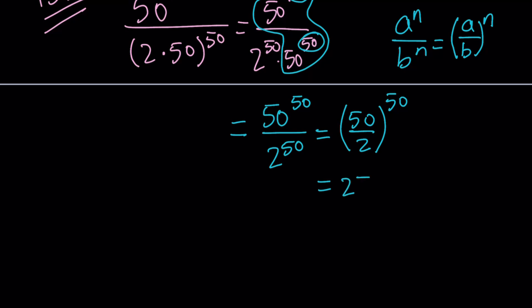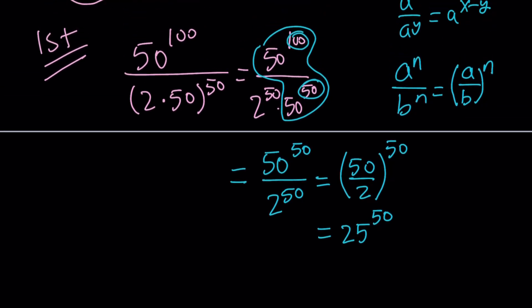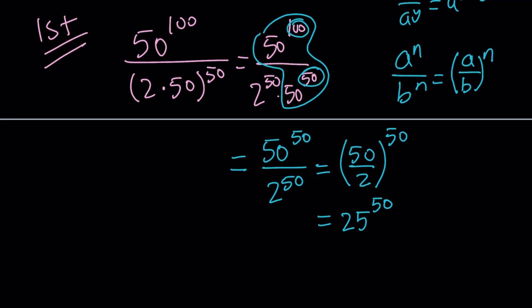You can write this as 50 over 2 to the power 50. But 50 divided by 2 equals 25. So this would be 25 to the power 50. If you want to know what this number is numerically, you can go ahead and put it in Wolfram Alpha or Desmos. But Wolfram Alpha is better at giving you more accurate answers. This is the first method.